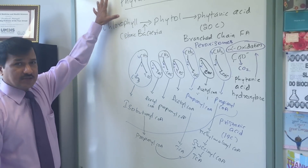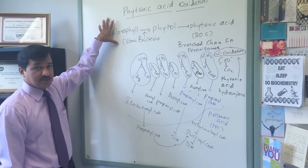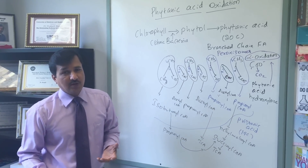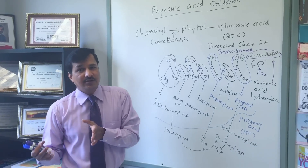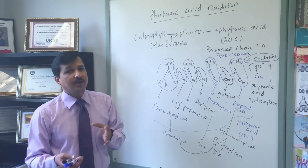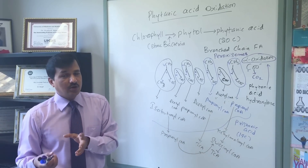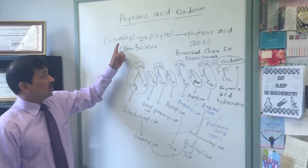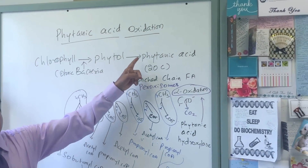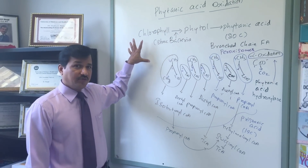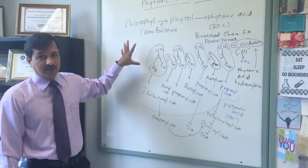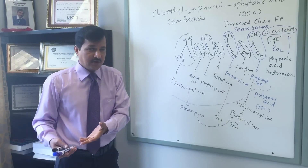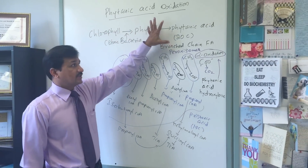Phytanic acid comes from chlorophyll degradation in the intestine — chlorophyll is converted to phytol, phytol into phytanic acid. Note that phytanic acid can become part of our fat in adipose tissue. Those who consume meat (non-vegetarians) have higher concentration of phytanic acid in their blood compared to vegetarians, because ruminant meat has more phytanic acid accumulated. Vegetarians will also have phytanic acid since chlorophyll in their intestine is converted to phytol and then to phytanic acid, but comparatively non-vegetarians have more because of ruminant meat consumption.